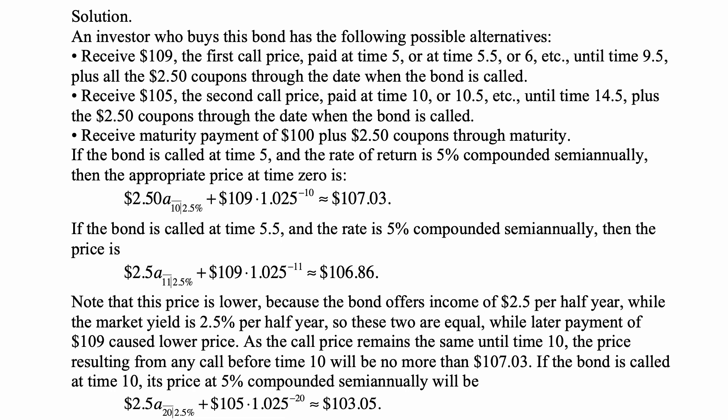plus all the $2.50 coupons through the date when the bond is called. Or receive $105, the second call price, paid at time 10 or 10.5, etc., until time 14.5, plus all the $2.50 coupons through the date when the bond is called.